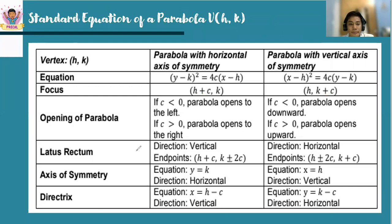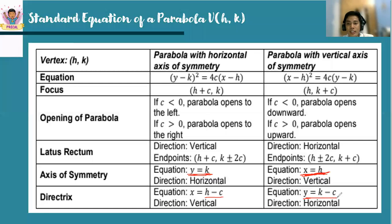For the focus, we follow the formula — it's either plus or minus depending on the position. The same applies to the endpoints of the latus rectum. The axis of symmetry follows the formula y = k for horizontal parabolas. For a parabola which opens upward or downward, the axis of symmetry is x = h. For the directrix, we have x = h - c for horizontal parabolas, and y = k - c for vertical ones. Do not forget: when the equation is y equals something, it is a horizontal line; when it is x equals something, it is a vertical line.